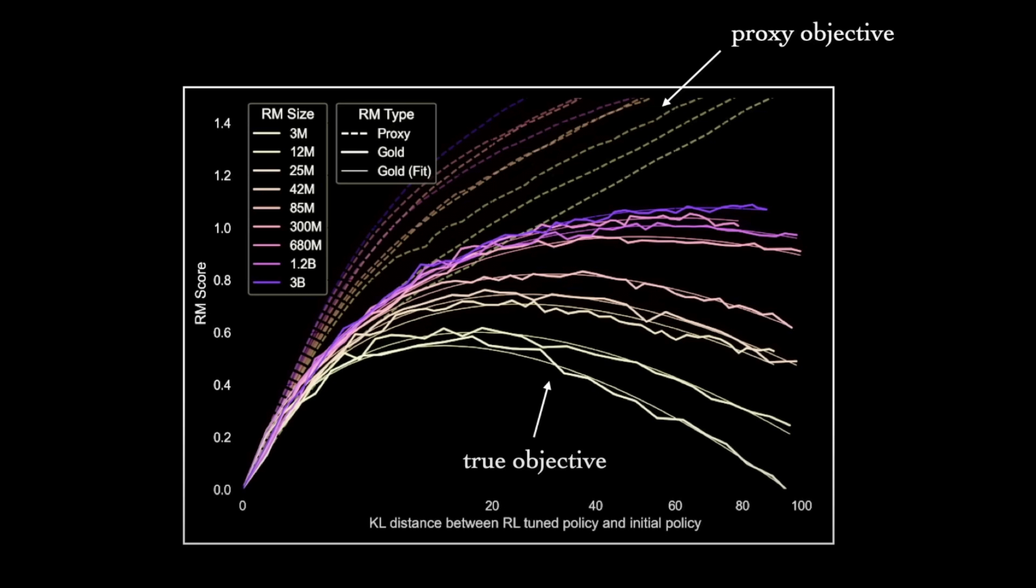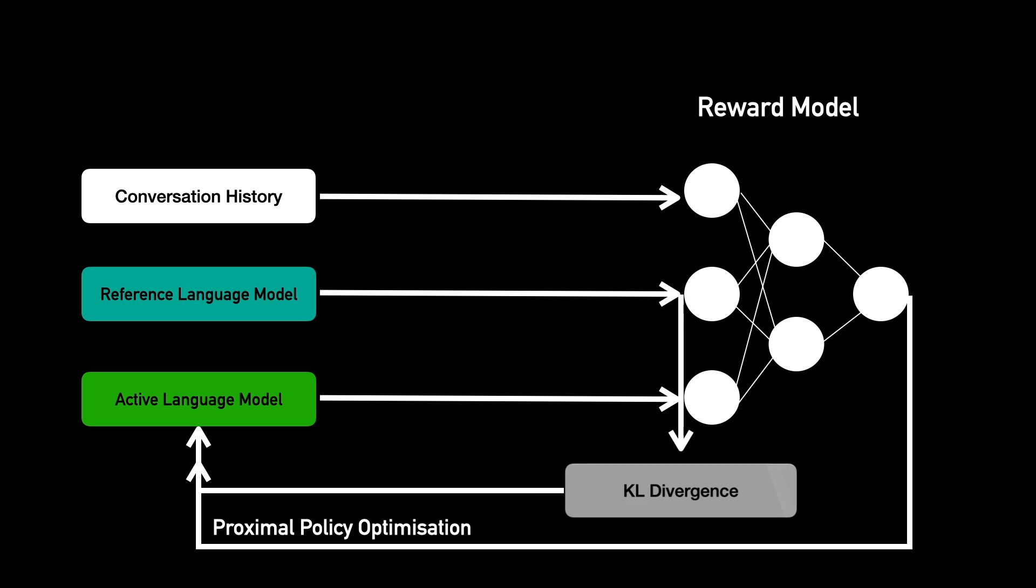This has been observed experimentally as well, where after a few rounds of training, the active language model will just stray away from its behavior just to game the reward model. To make sure this doesn't happen, the KL divergence between the active and the reference language model is also used to update the active language model. This makes sure that the active LM does not stray away too far from the behavior of the reference model.